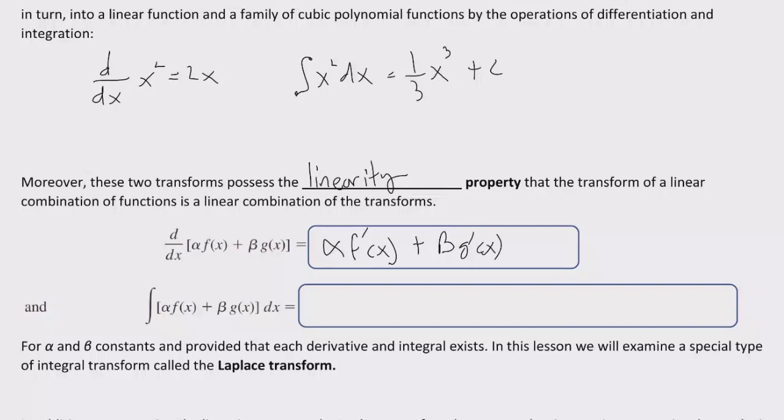And if I integrate alpha f of x plus beta g of x, I essentially can factor out that alpha and the beta, for alpha and beta constants, provided that each derivative and integral actually exists.